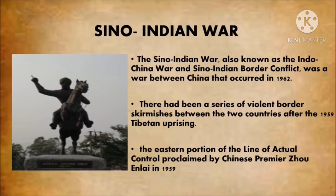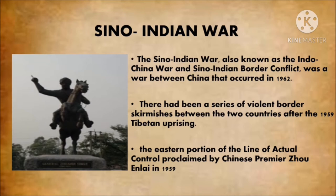The Sino-Indian War, also known as the Indo-China War, was a war between India and China that occurred in 1962. A Chinese-disputed Himalayan border was the main cause of the war. There had been a series of violent border incidents between the two countries after the 1959 Tibetan uprising, when India granted asylum to the Dalai Lama. India initiated a defensive forward policy from 1960 to hinder Chinese military patrols and logistics, in which it established outposts along the border including several north of the McMahon Line, the western portion of the line of actual control proclaimed by the Chinese military.